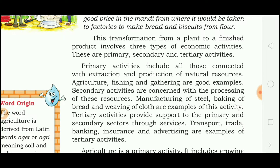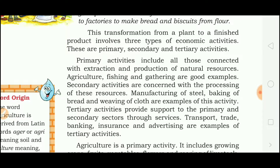Let's take an example of biscuits for better understanding. If you want to eat biscuits, you have to grow a crop of wheat for that. It is a primary activity. It includes all those connected with extraction and production of natural resources. Agriculture, fishing and gathering are also examples of primary activity.